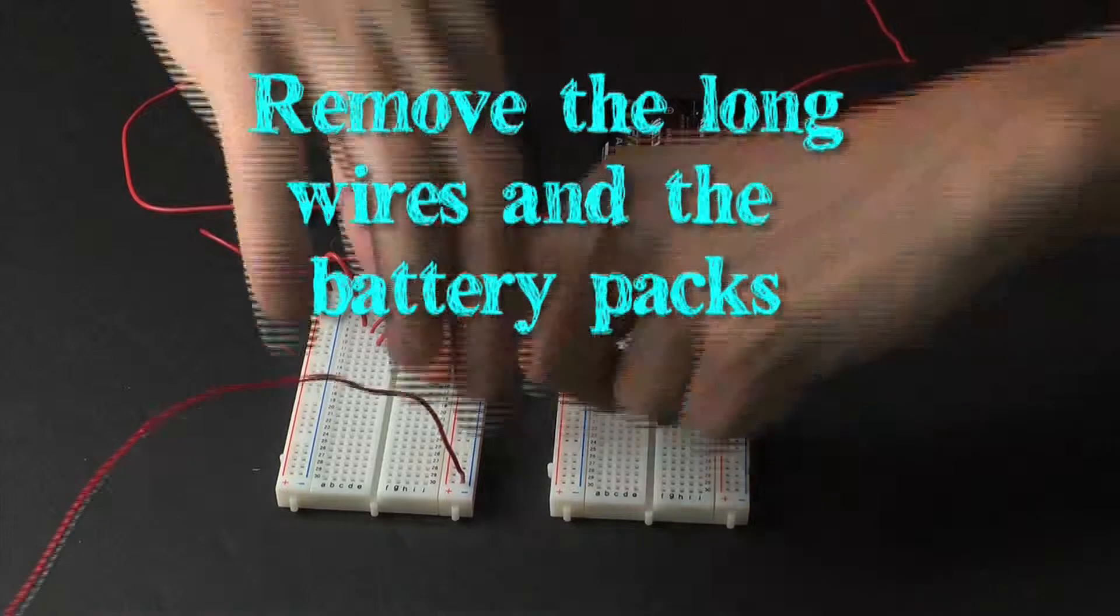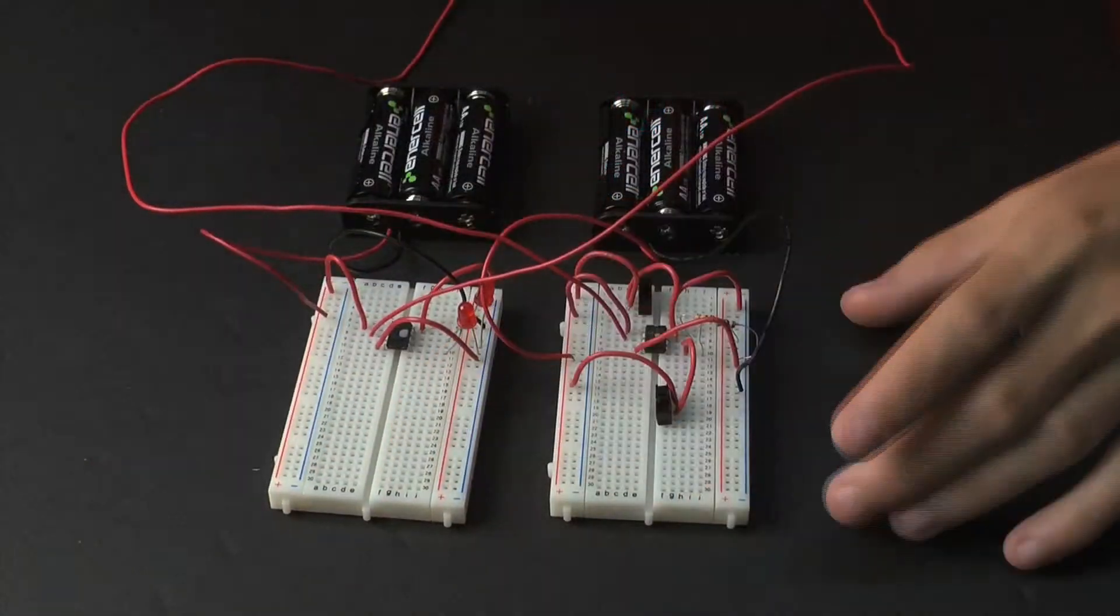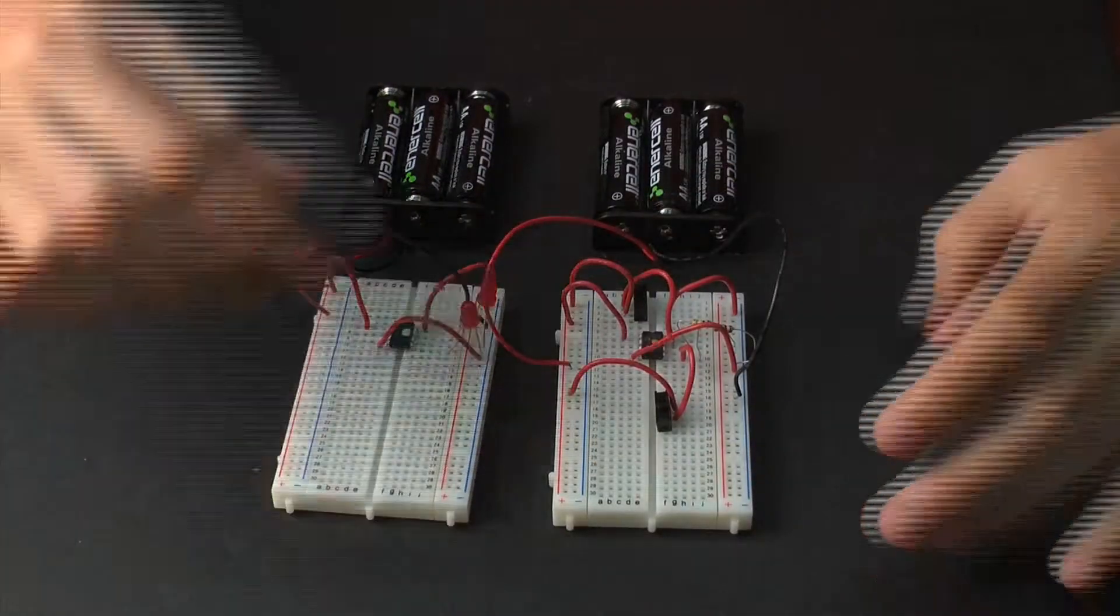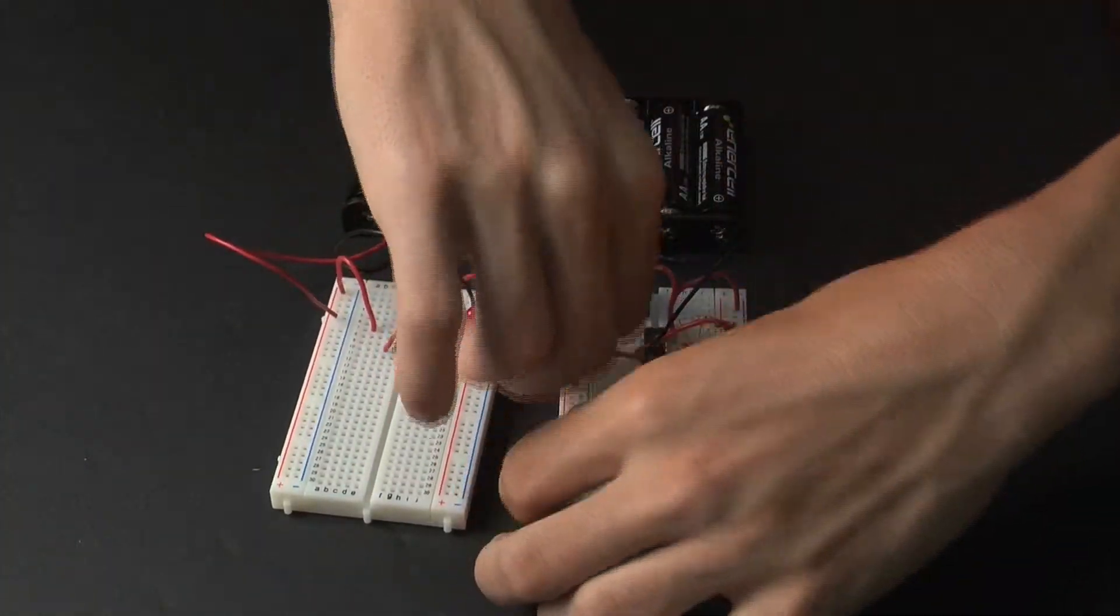In order to prepare for this activity, please remove the two long wires connecting the transmitter to the receiver. The RF transmitter and receiver chips will replace these wires.